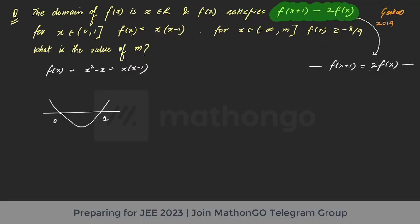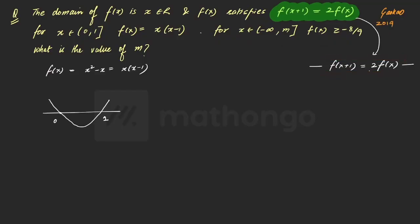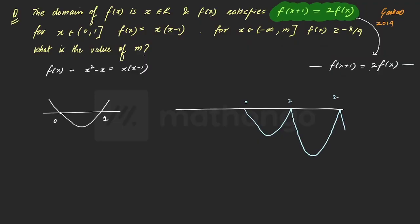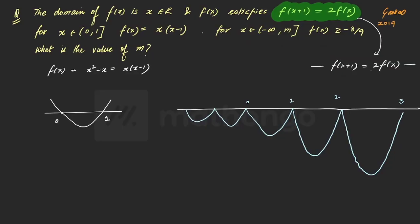We know f(x) on [0, 1], and using the functional equation we can trace the rest of the graph. From [1, 2] the graph has double magnitude; from [2, 3] it doubles again. Going left, from [−1, 0] the amplitude halves, and so on. The entire graph lies below the x-axis.